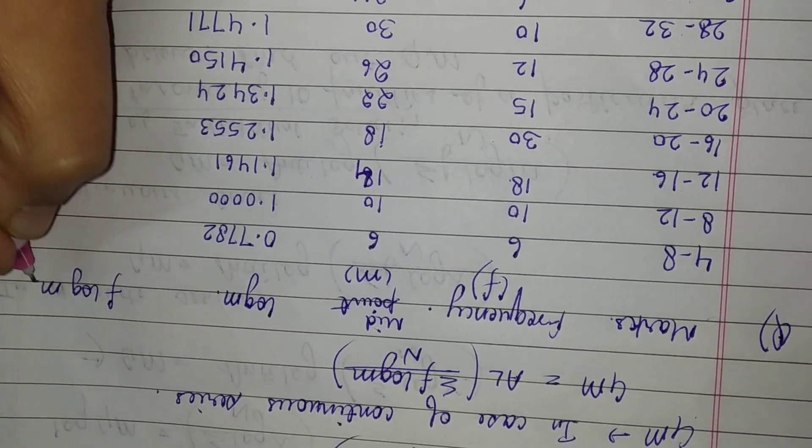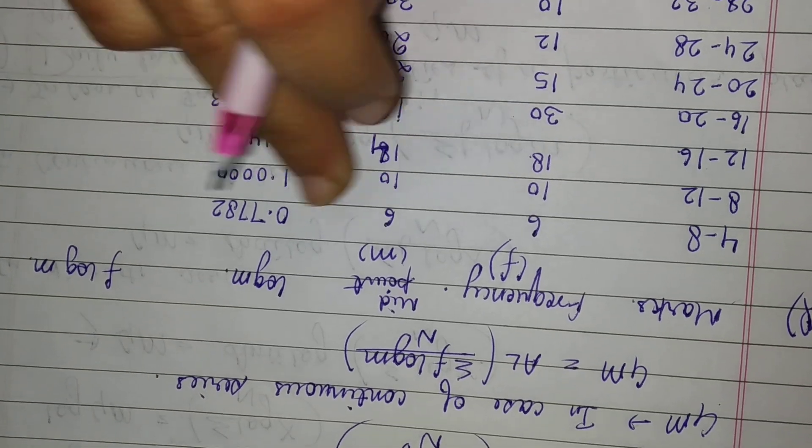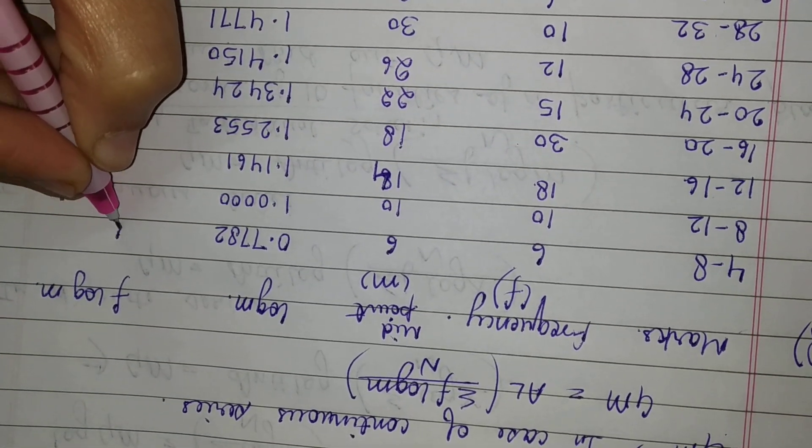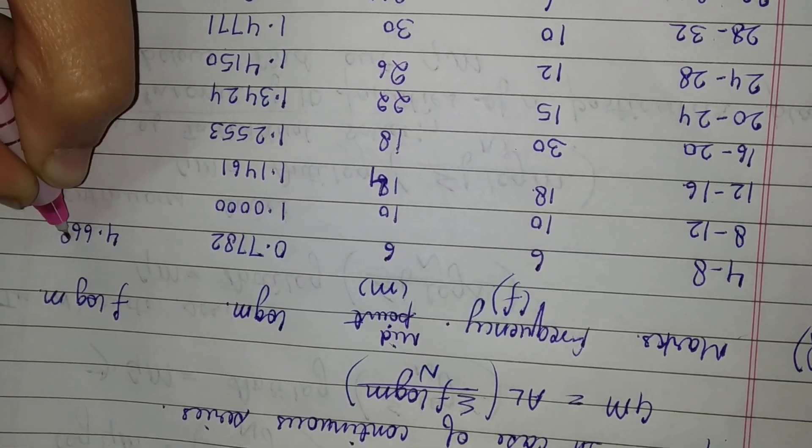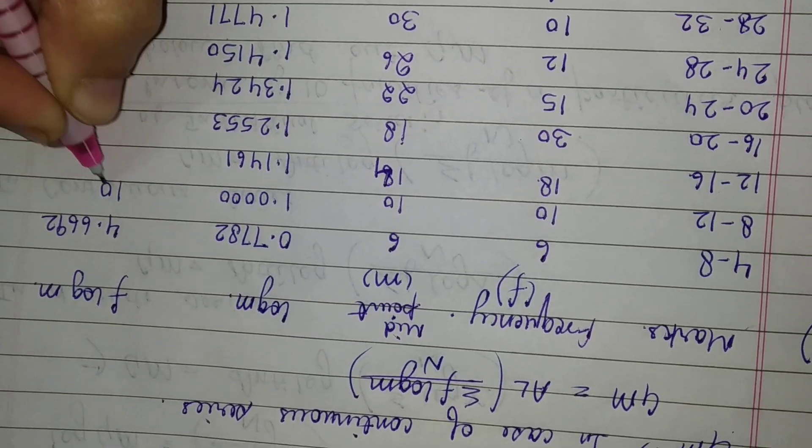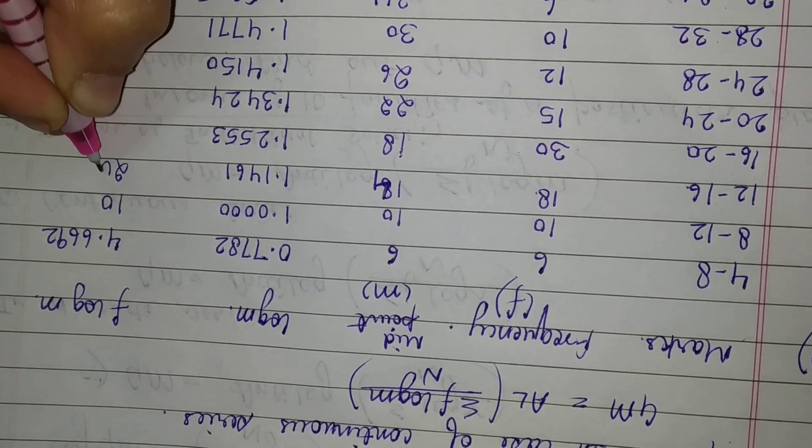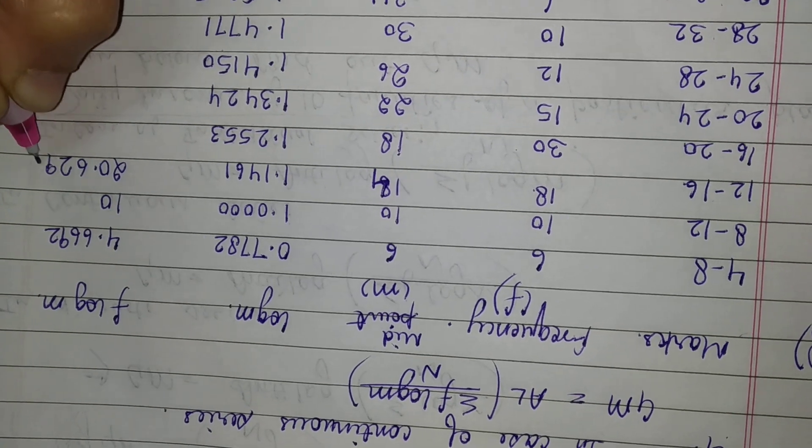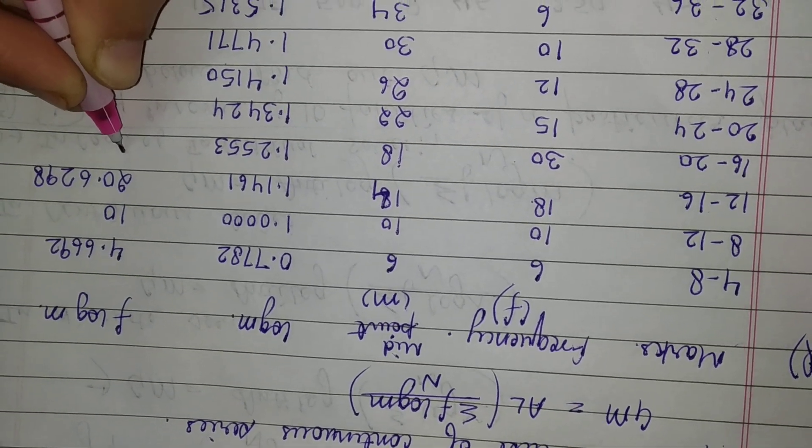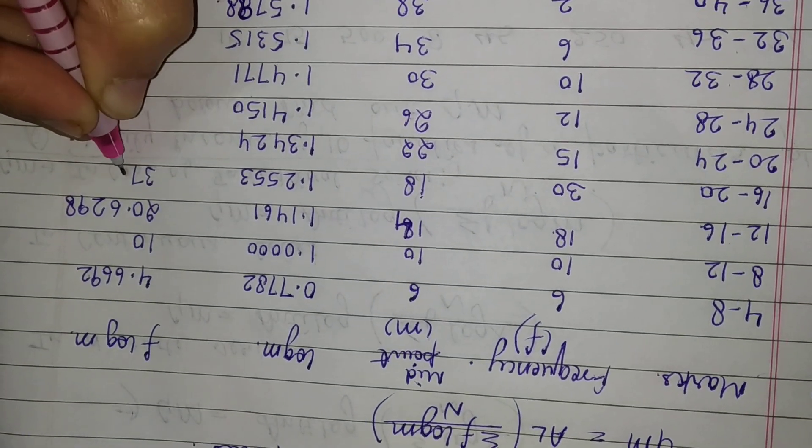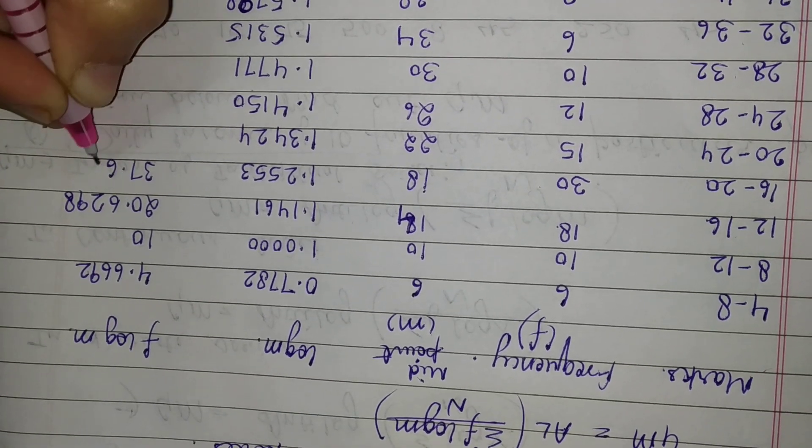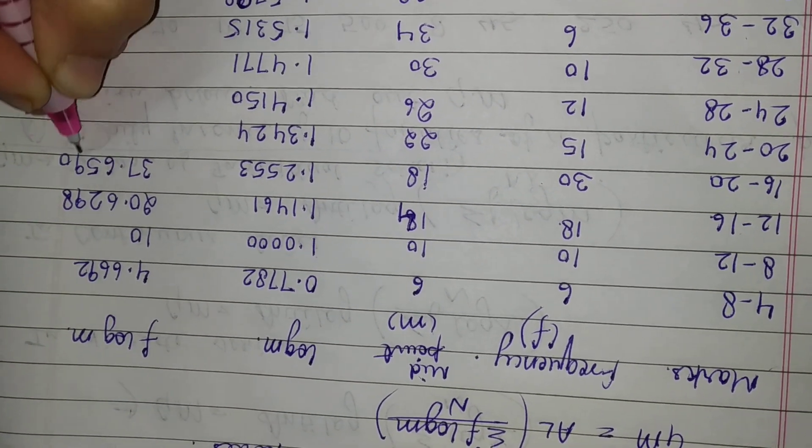After multiplying 6 with this I get 4.6692, then 20.6298, then I get 37.6590.